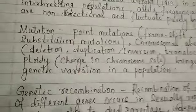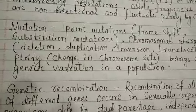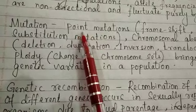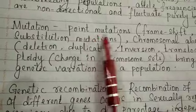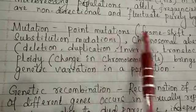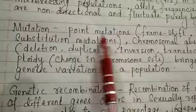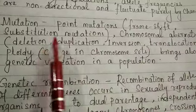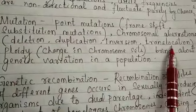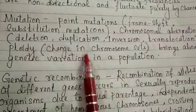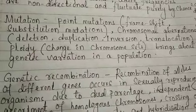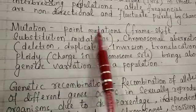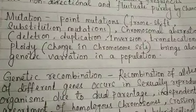Next comes mutation. Mutations are the spontaneous changes which occur suddenly. They could be of variable types. Point mutation: the sequence of nucleotides is changed because of frameshift mutation or substitution mutation, causing minor changes. Chromosomal aberration: a part of the chromosome is changed due to deletion, duplication, inversion, or translocation. Ploidy: sometimes the whole set of chromosomes is altered. All three bring about genetic variation in populations.